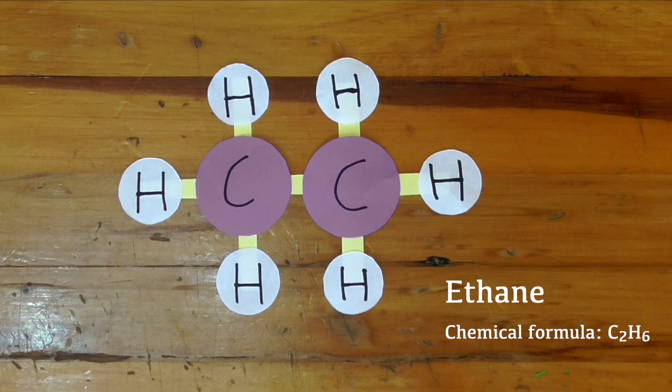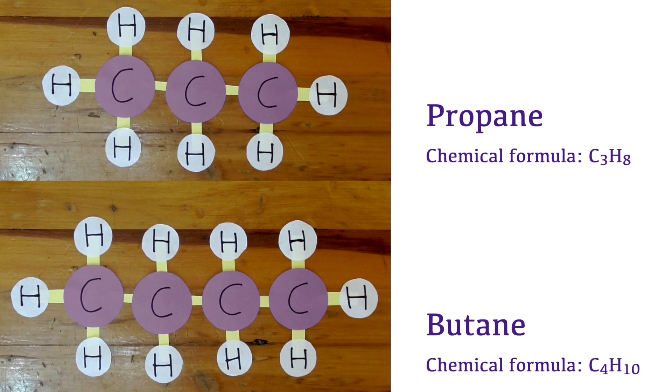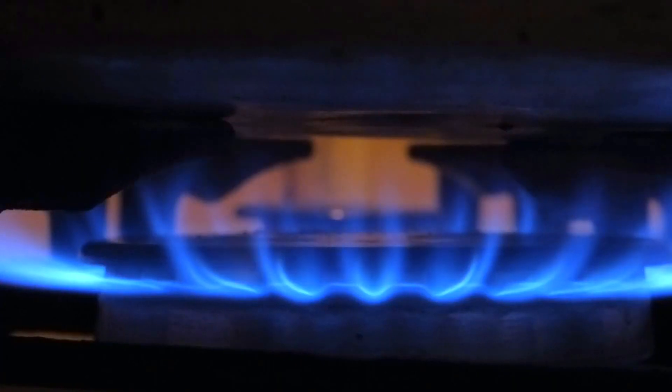This substance is also a gas under ordinary conditions, as are propane and butane, which contain three and four carbon atoms respectively. Methane, ethane, propane and butane are all ingredients in the fuel known as natural gas.